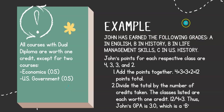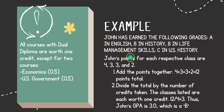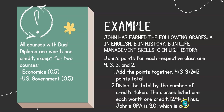John has earned the following grades: an A in English, a B in History, a B in Life Management Skills, and a C in U.S. History. His points for each class are four, three, three, and two respectively. Adding the points together: four plus three plus three plus two equals twelve points total. Now we divide by the number of credits taken — he took four classes all worth one credit each, so four credits. Twelve divided by four is three, so his final GPA is 3.0, which is a B.